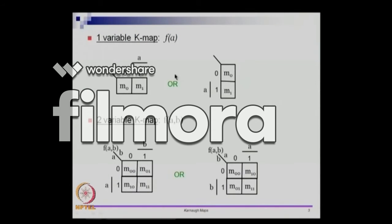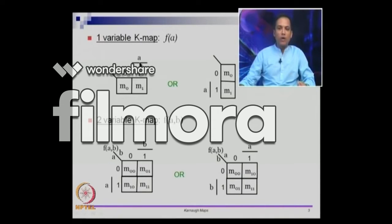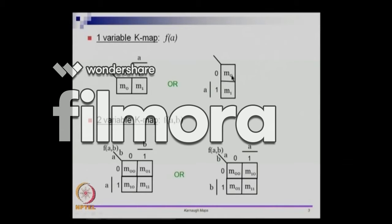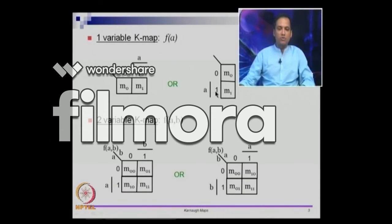A K-map for one variable essentially looks like this. If I have only one input a, then a can take two combinations: either a can be 0 or a can be 1. I can write it in row form — when a equals 0 you put the entry m0, and when a equals 1 you put the entry m1. So m0 corresponds to row 0 and m1 corresponds to row 1. When a is 1, you go and look at what is the value for m1, which tells you what the value of the function is.